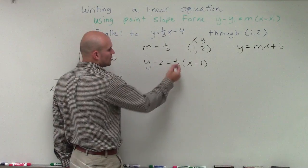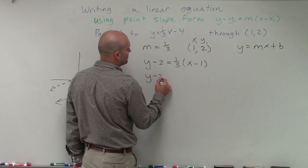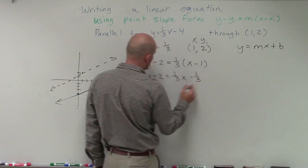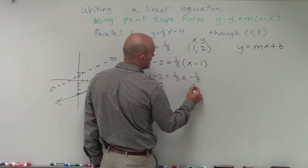I can't simplify the left side anymore. I can simplify the right side by applying distributive property. So I get 1 third x minus 1 third. Then I'm just going to add 2 to isolate my variable.